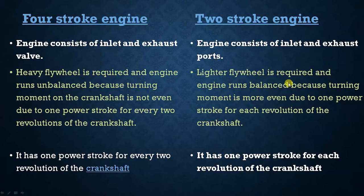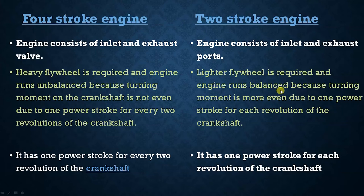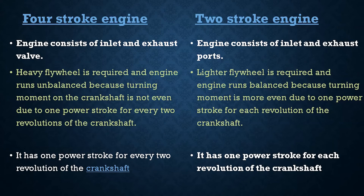In the four stroke engine there is one power stroke for every two revolutions — the entire cycle completes in two revolutions of the crankshaft, meaning the piston moves twice downward. In a two stroke engine, there is one power stroke for each revolution of the crankshaft — power is produced with each revolution.